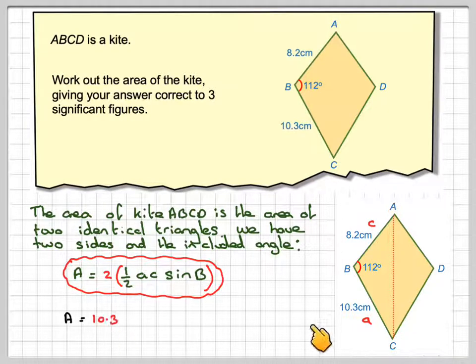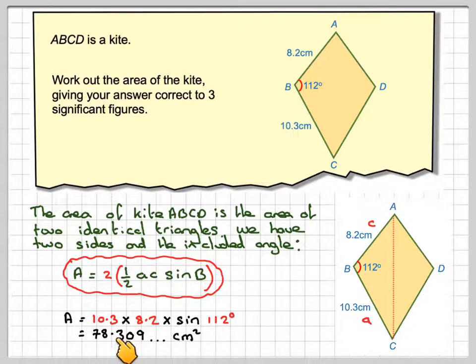So the area will be 10.3 times 8.2 times the sine of 112. On your calculator, making sure your calculator is in degree mode, put those numbers in, and you'll get 78.309 centimeters squared.